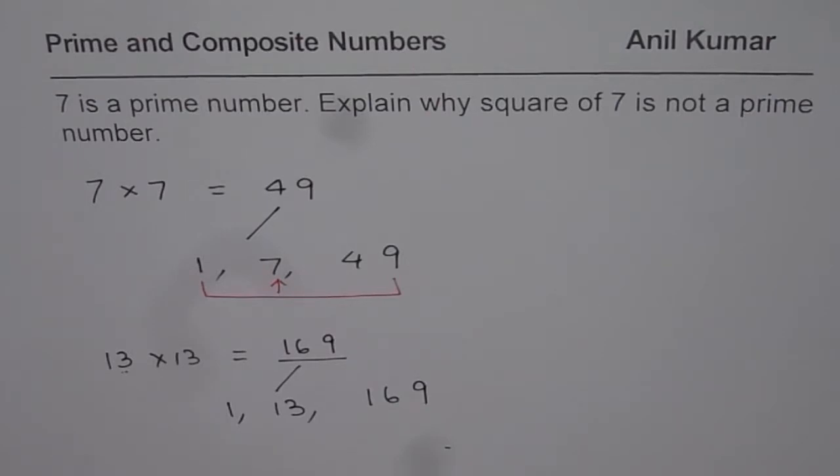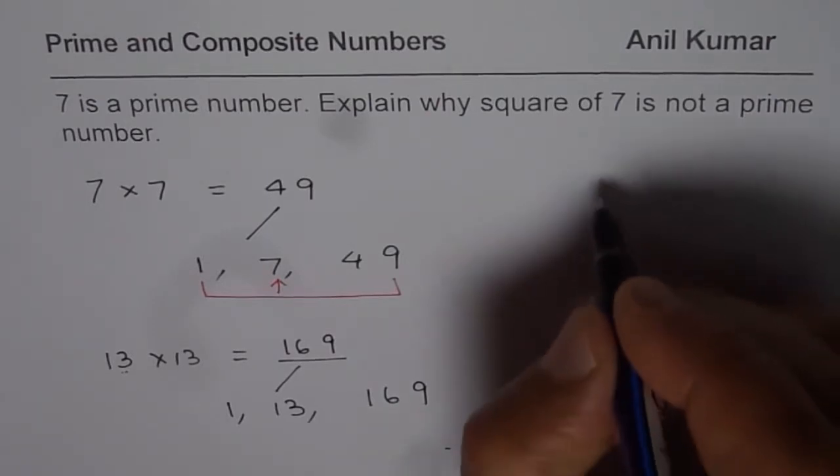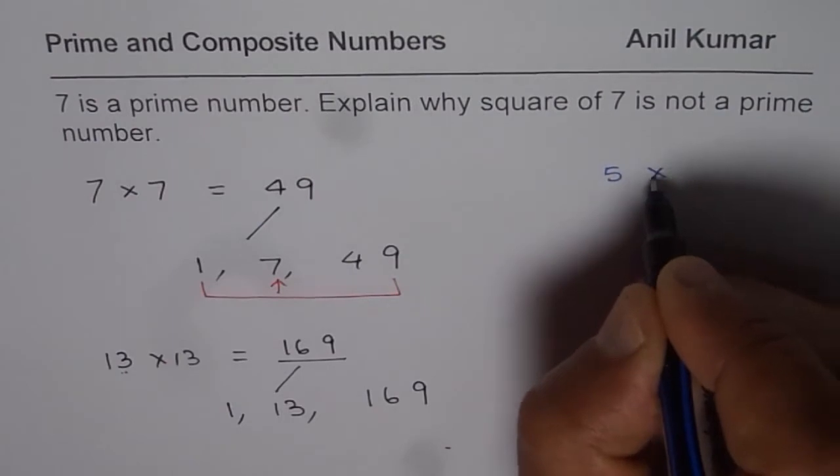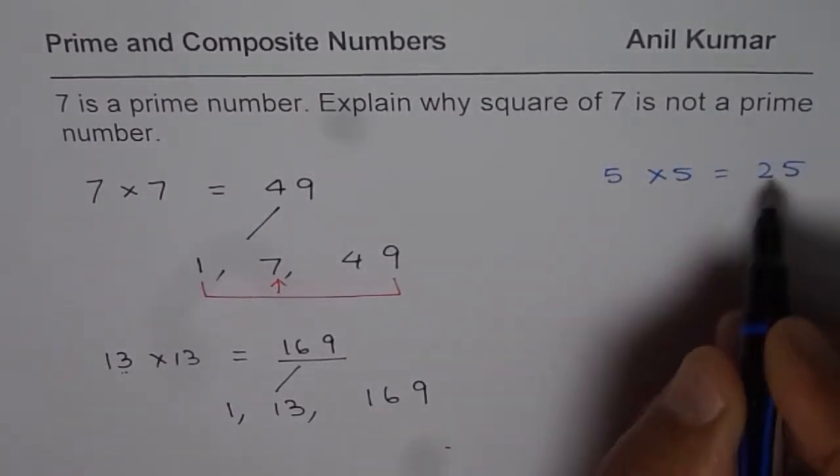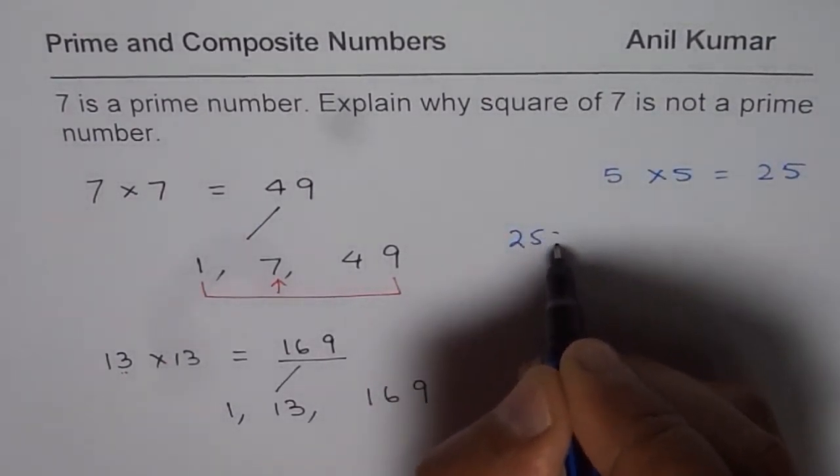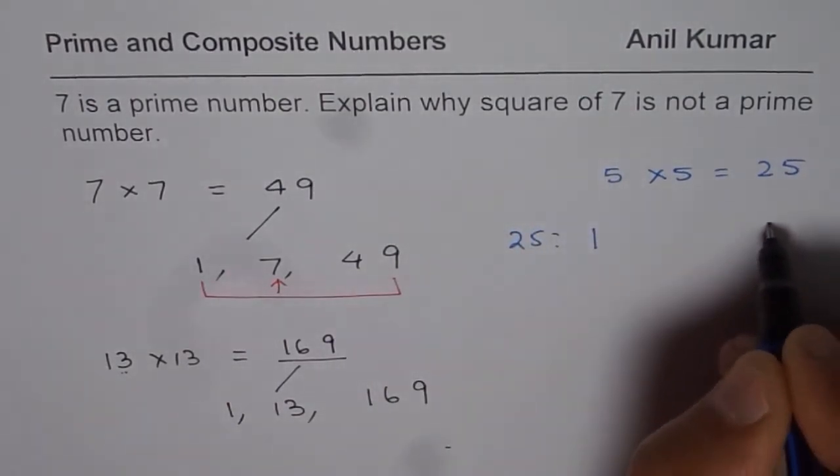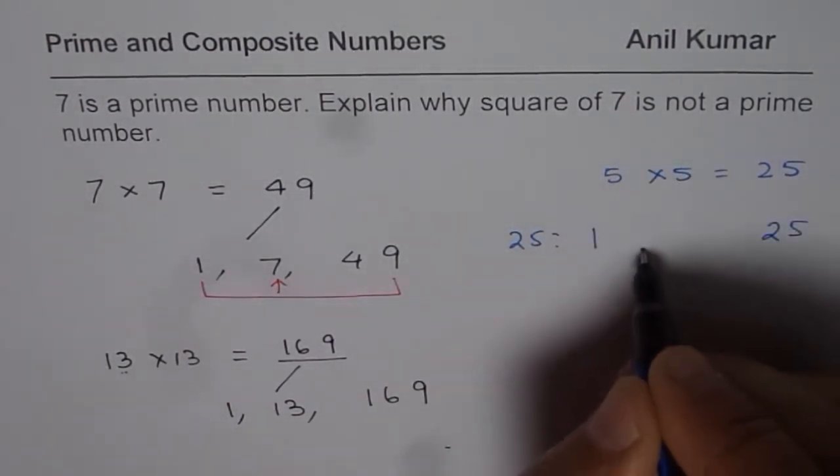You can figure this out for different numbers. Let's say 5. 5 times 5 is 25. What are the factors of 25? The factors of 25 are 1, 5, and 25.